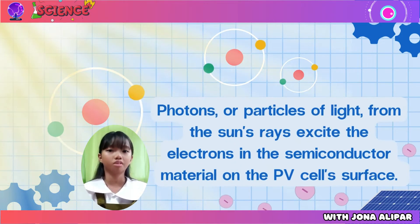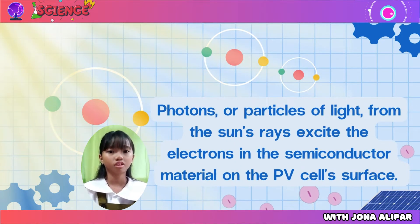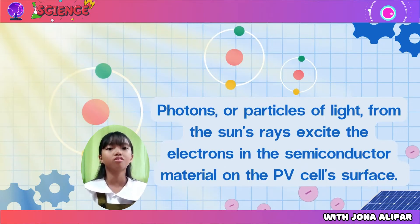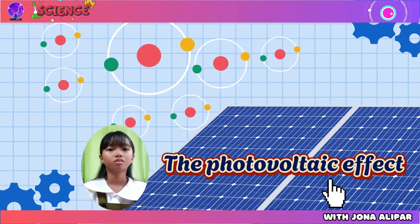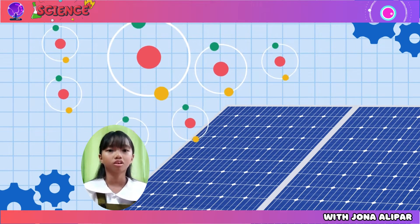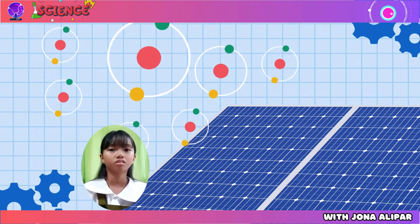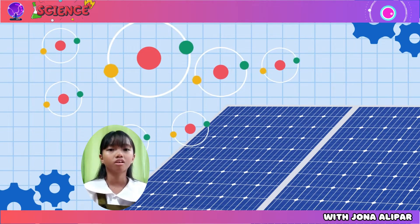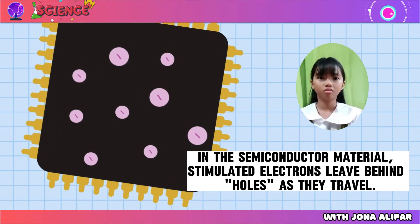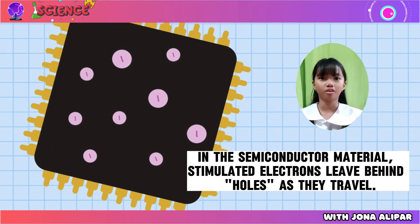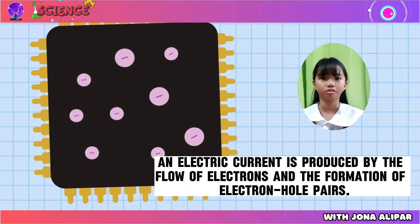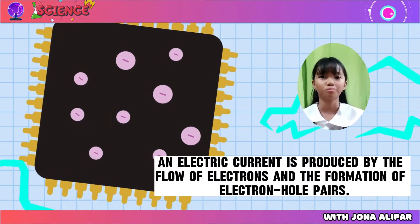Photons, or particles of light from the sun's rays, excite the electrons in the semiconductor material on the PV cell surface. We call this mechanism the photovoltaic effect. When photon energy is absorbed by a semiconductor, electrons are liberated from their regular locations within atoms. Stimulated electrons leave behind holes as they travel, and an electric current is produced by the flow of electrons and the formation of electron-hole pairs.